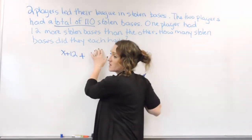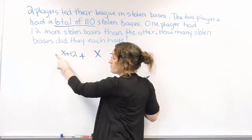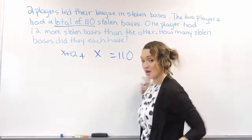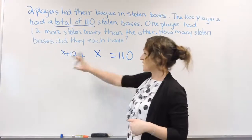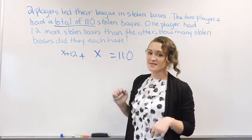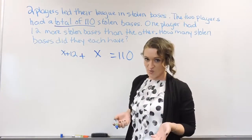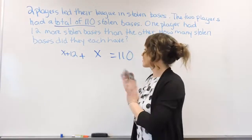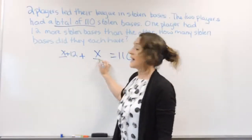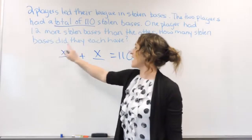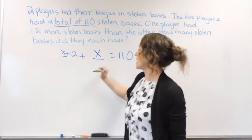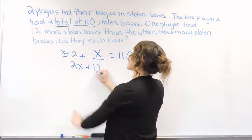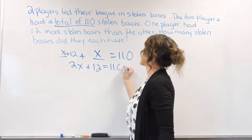We have no clue on this one — we only know that this one has 12 more. But we do know that they add up to 110. So X plus 12 plus X is equal to 110. That is how you set up this problem. This is the equation that we need to solve. To solve it, we combine like terms: 1X plus 1X is 2X. Drop down the 12, and that equals 110.